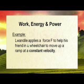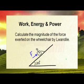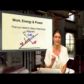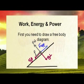Let's apply this to an example. Londilli applies a force F to help his friend in a wheelchair move up a ramp at a constant velocity. The ramp makes a 30-degree angle to the horizontal. The combined mass of his friend and the wheelchair is 100 kg, and the frictional force between the wheelchair and the surface is 20 Newtons. We need to calculate the magnitude of the force exerted on the wheelchair by Londilli. Always start by drawing a free body diagram: F applied, normal force, Fg parallel, Fg perpendicular, and friction opposite to the direction of motion.